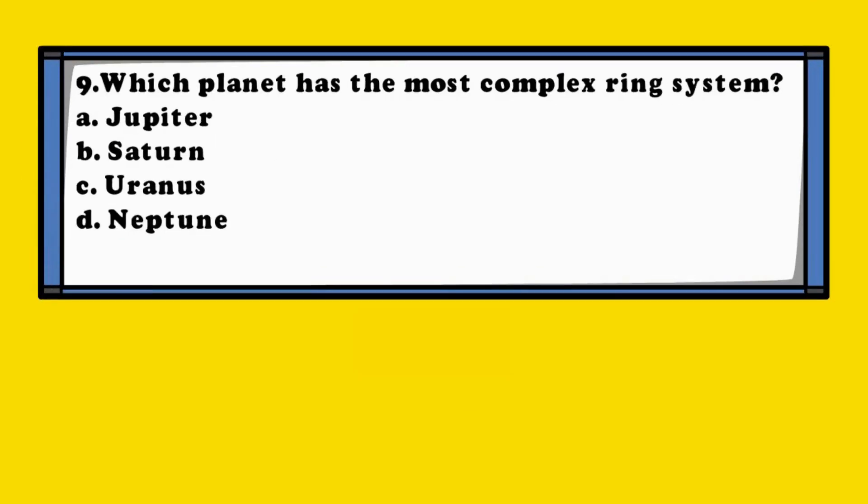Question 9. Which planet has the most complex ring system? A. Jupiter, B. Saturn, C. Uranus, D. Neptune.